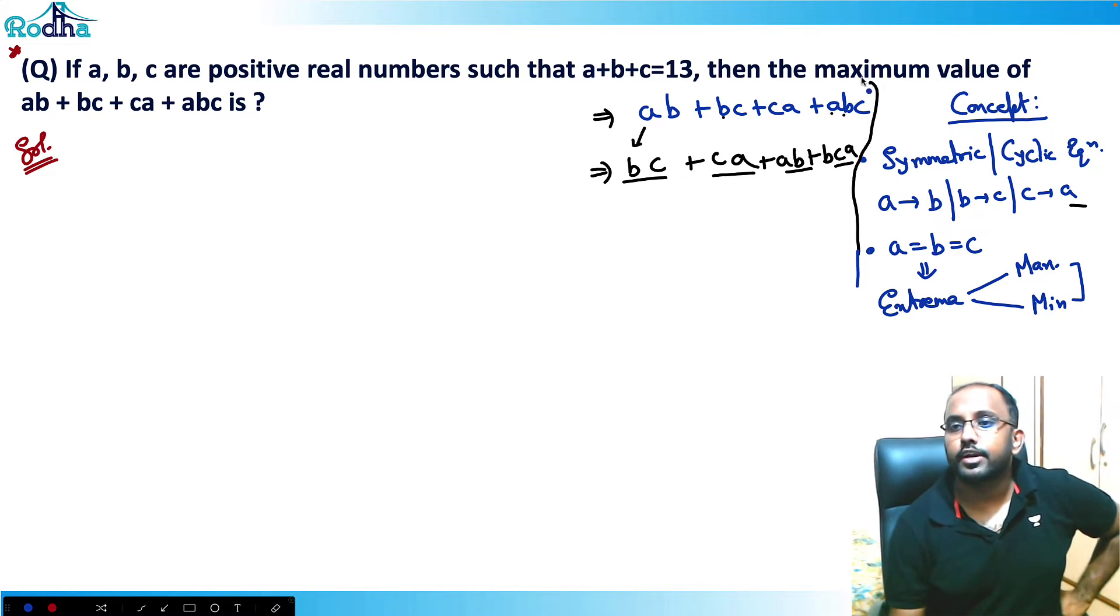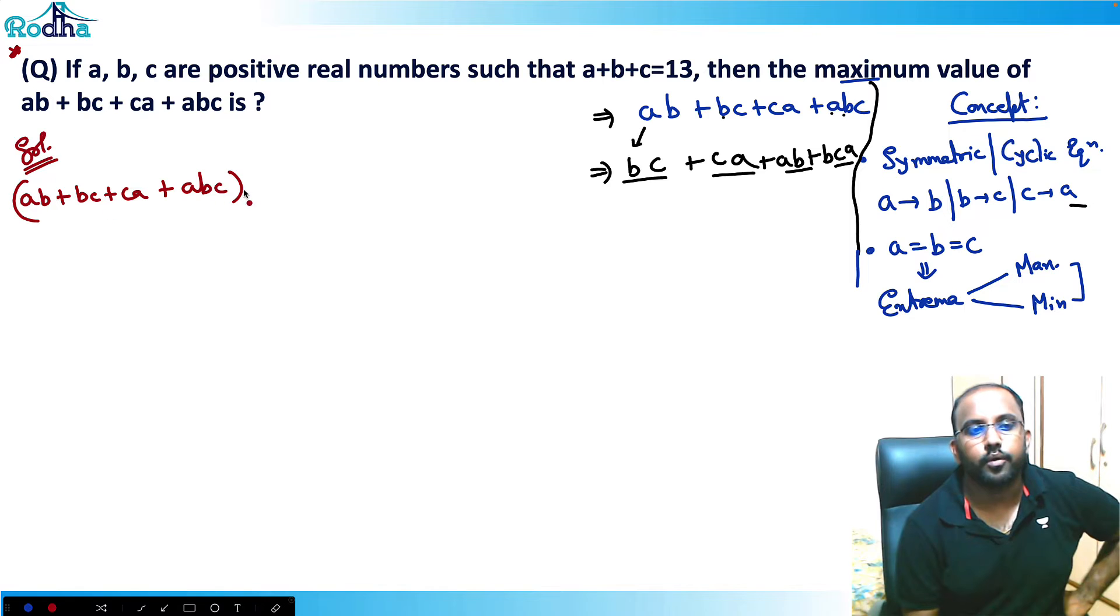Here I need to find the maximum value of this equation - that is ab plus bc plus ca plus abc. That maximum value I want. First of all, what I will be doing is, since this is a cyclic equation, I will just equate a equal to b equal to c, all will be 13 by 3. So I'll just put 13 by 3 here.